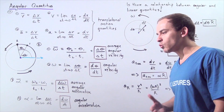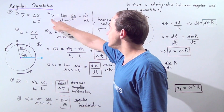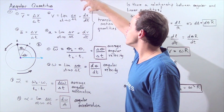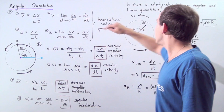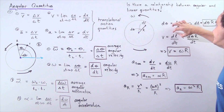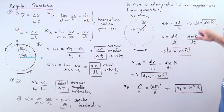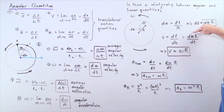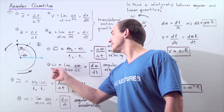We want to build a relationship between instantaneous velocity and angular velocity. Instantaneous velocity is given by DX divided by DT, and because this distance is infinitely small, DX equals DL. So velocity equals DL divided by DT. Since DL equals D theta times R, we substitute to get velocity equals D theta times R divided by DT. Notice that D theta divided by DT is simply our instantaneous angular velocity.